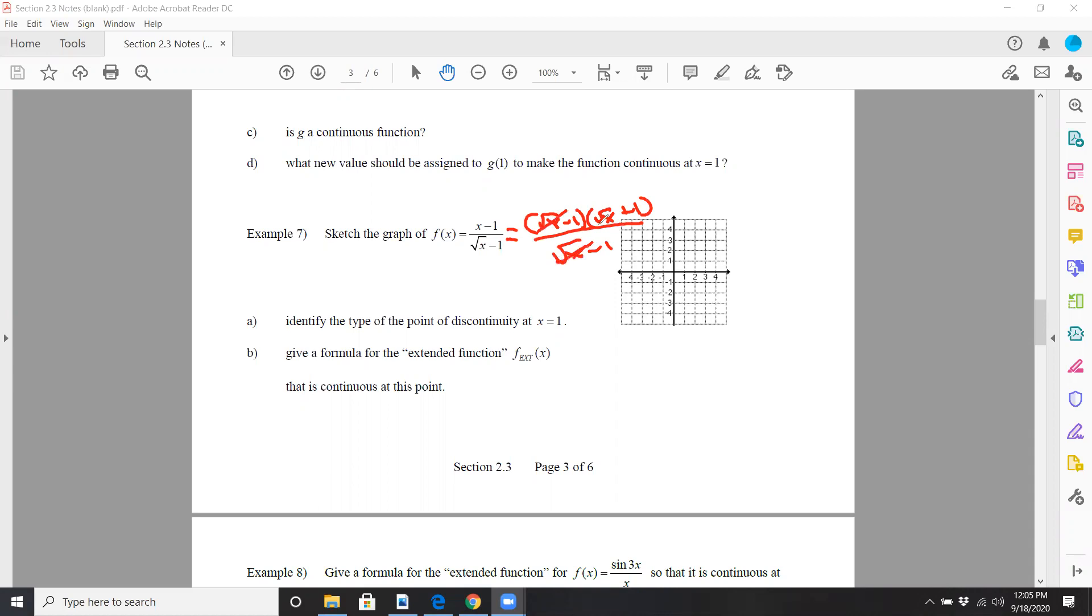Because if you were to FOIL root x minus one, root x plus one, you do get x minus one. These cancel, so you get root x plus one, which I know is a square root function with a vertical shift of one. However, one is undefined because obviously you can't divide by zero, so it's actually going to be a hole in this case. And it looks like that.